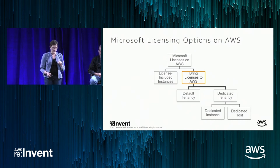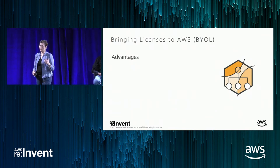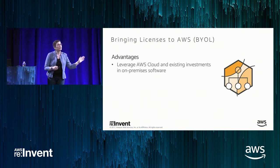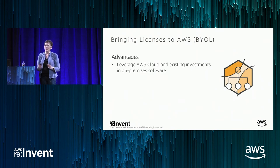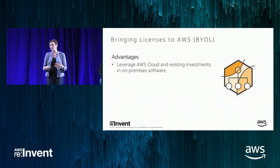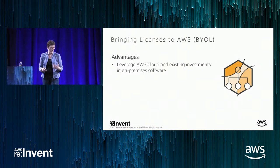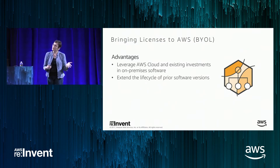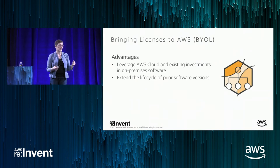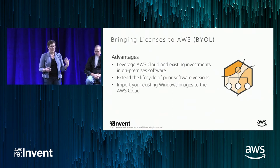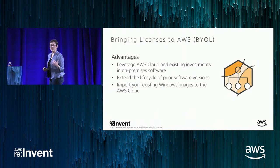Many of you are looking at migrating — doing a lift and shift of older applications from on-premises to AWS — and one of the considerations is whether you just invested a lot in an enterprise agreement. By bringing these licenses to AWS, you can leverage those investments. You also don't have to worry about upgrade paths for older versions, and bringing those images straight over to AWS is a nice time-saving feature.